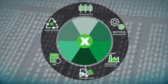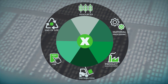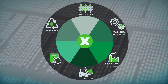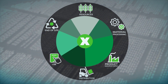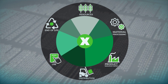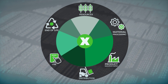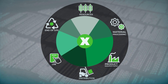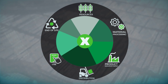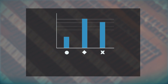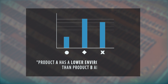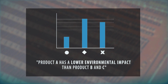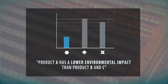Life Cycle Assessment shows in which life cycle stage environmental impacts are highest, and can even assess individual steps in the production process. This way, companies can decide how to improve the environmental performance of their product. Results can be used for marketing purposes — for example, Product A has a lower environmental impact than Product B and C.